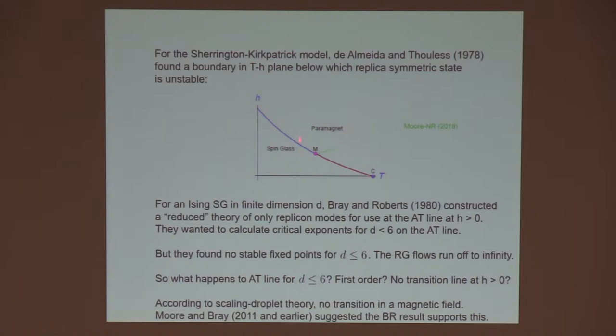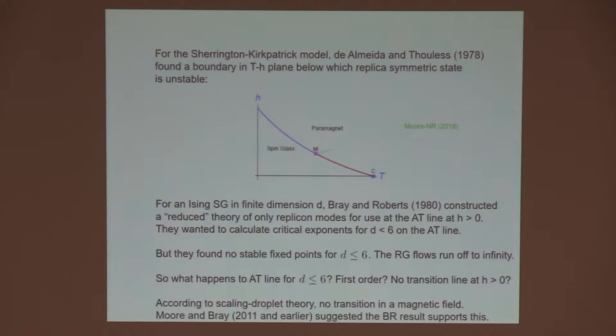So Bray and Roberts in 1980, very early, came along and said, let's suppose we're in low dimensions and we want to calculate critical exponents on this line below six dimensions. As you approach this line, unlike at zero field, only some subset of the degrees of freedom becomes massless. The so-called replicons go massless. They made a reduced theory in which they integrated out the other modes, which are still massive, and just used these replicon modes. That's what I'll call the reduced theory, a Landau-Ginzburg type of theory.